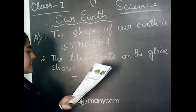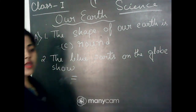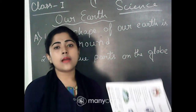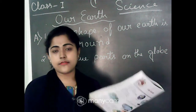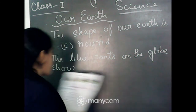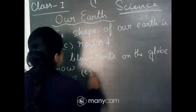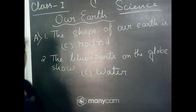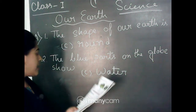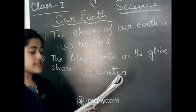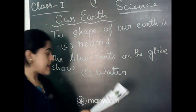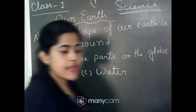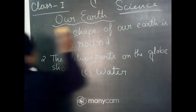Next, the blue parts on the globe. As I told you, if you have a globe at home you can check — some parts are blue and some parts are colorful. The blue parts mean water, so the correct option is option C: water. So the answers for Question A are: question one, the shape of our Earth is round; and question two, the blue parts on the globe show water.